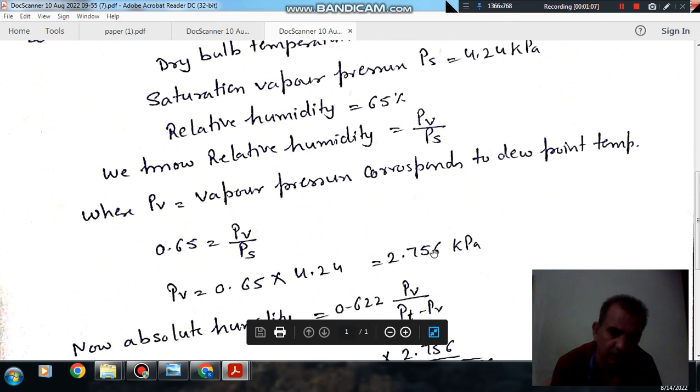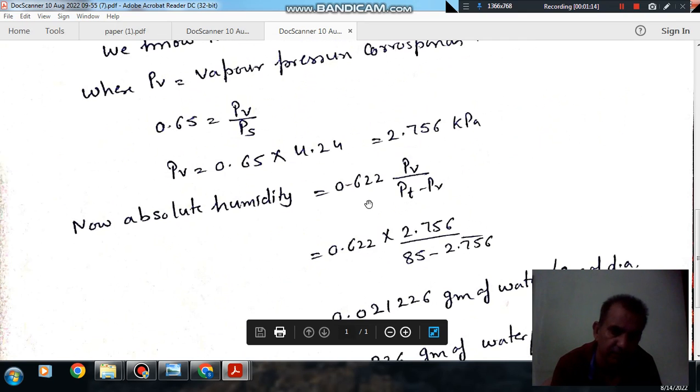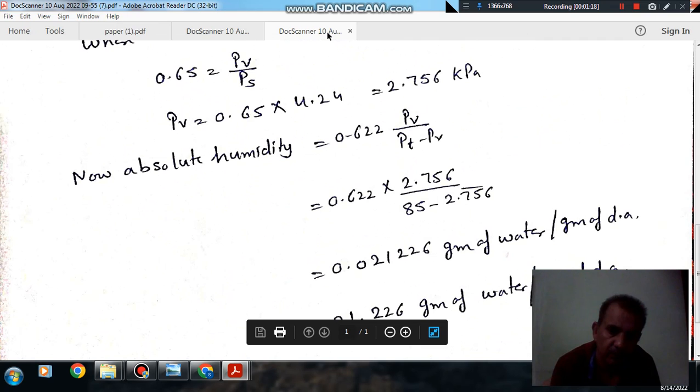So, PV comes out as 2.756 kPa. And in terms of vapor pressure and total pressure, the absolute humidity is given as 0.622 times PV divided by PT minus PV.